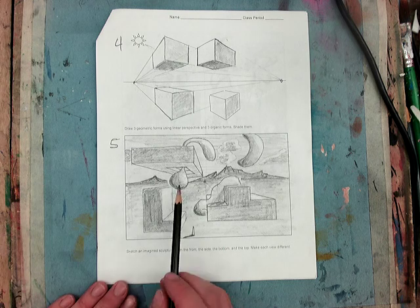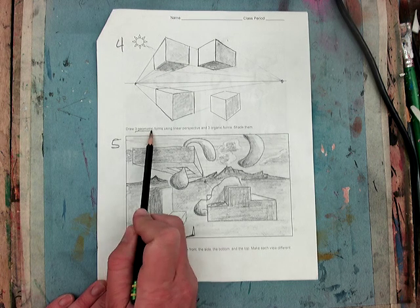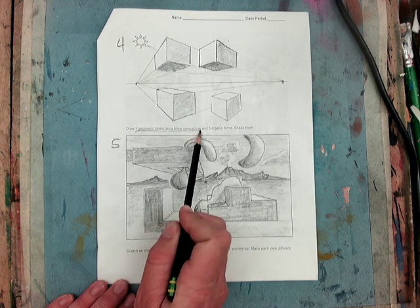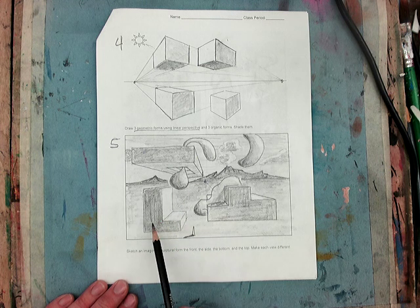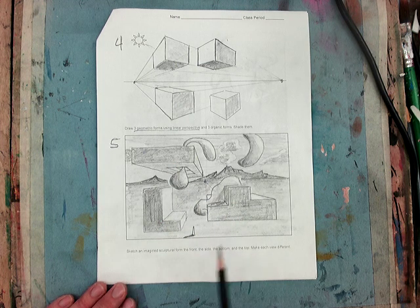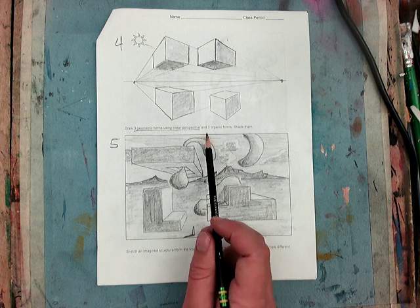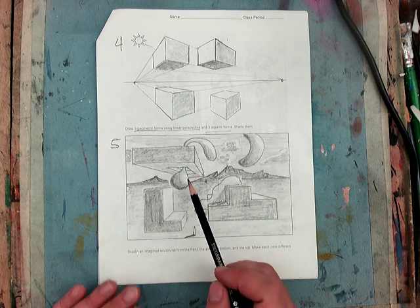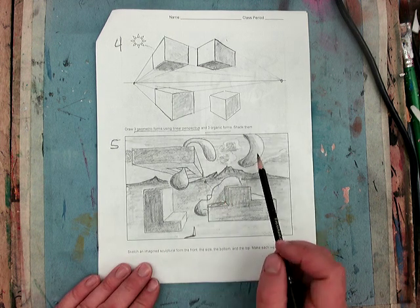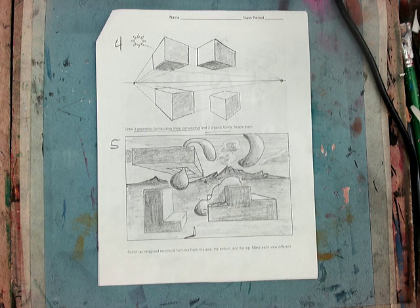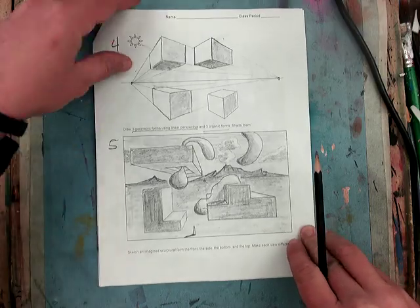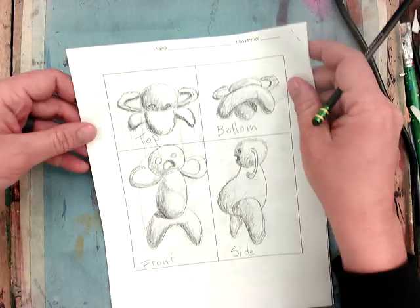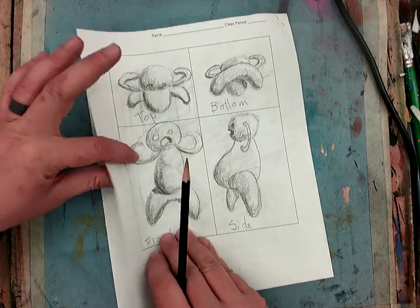So we want to look for three geometric forms that are using linear perspective. So they can be boxes. One, two, three. And then we want to see three organic forms. One, two, three. And then we want all the forms to be shaded. That is five.